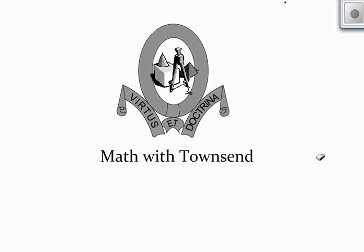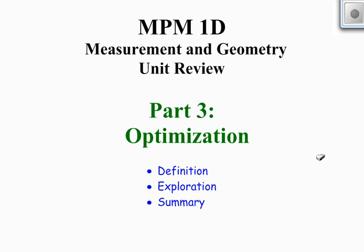Hi there. My name is Miss Townsend and I love math. Welcome to Math with Townsend. This video is for Grade 9 academic students who are studying the measurement and geometry unit of the course. As part of the measurement unit, we've looked at two-dimensional area and perimeter, three-dimensional volume and surface area. And now part three, we look at optimization.